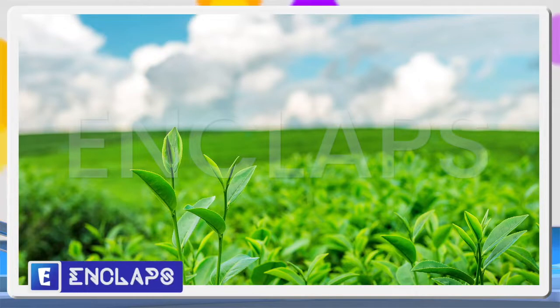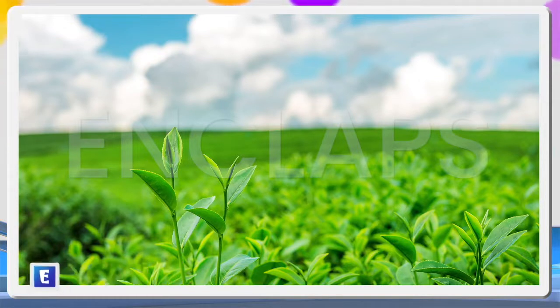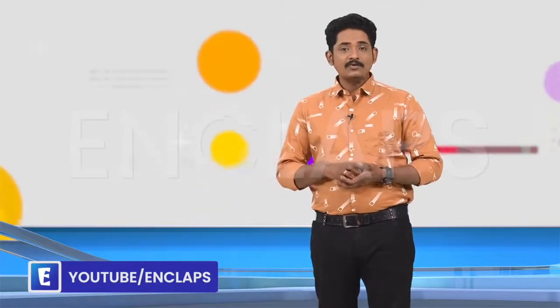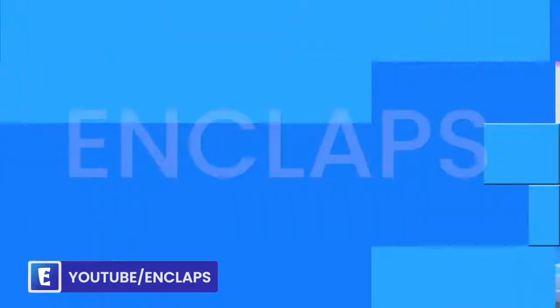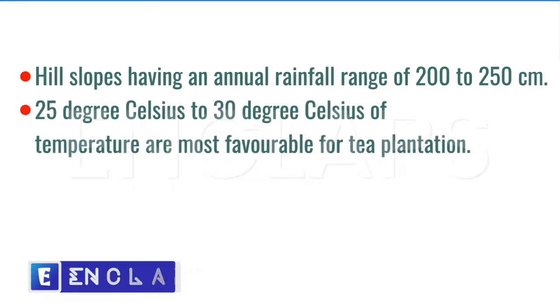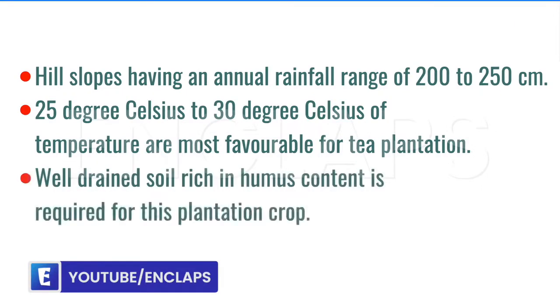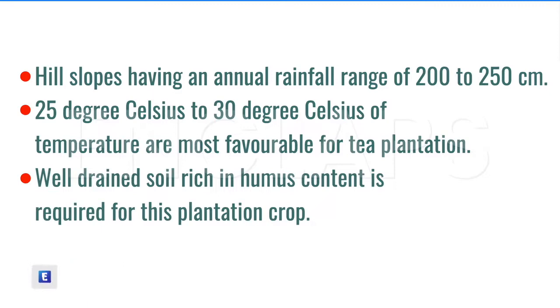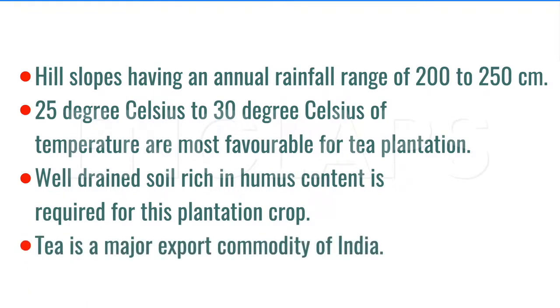Now we discuss about beverage crops. Tea and coffee are the examples of beverage crops. The most widely used beverage crop is tea. India is the largest producer of tea in the world. States such as West Bengal, Kerala and Tamil Nadu are confined to tea plantations. Hill slopes having an annual rainfall range of 200 to 250 centimeters and a temperature of 25 to 30 degree Celsius are most favorable for tea plantations. Well-drained soil rich in humus is required for the plantation of tea. Tea is a major export commodity of India.